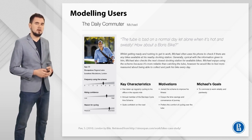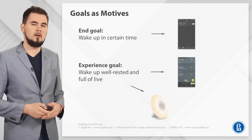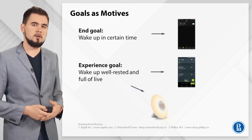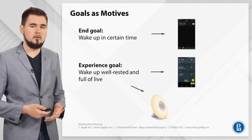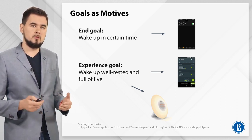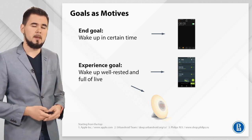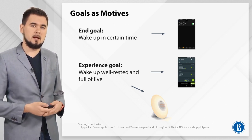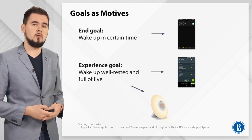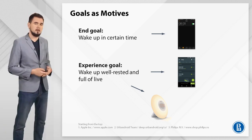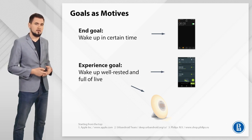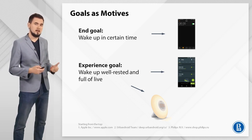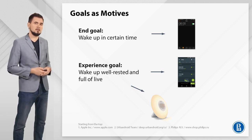All personas should include a description of their motives. Motivation refers to not only what a user wants to do — those are end goals — but also what the user wants to feel, which are experience goals, and whom the user wants to be, which are life goals. The slide shows examples of the end goal and the experience goal. Life goals describe a persona's long-term desires, motivations, and self-image attributes, which cause the persona to connect with the product. A relevant example of the life goal would be to be healthy.